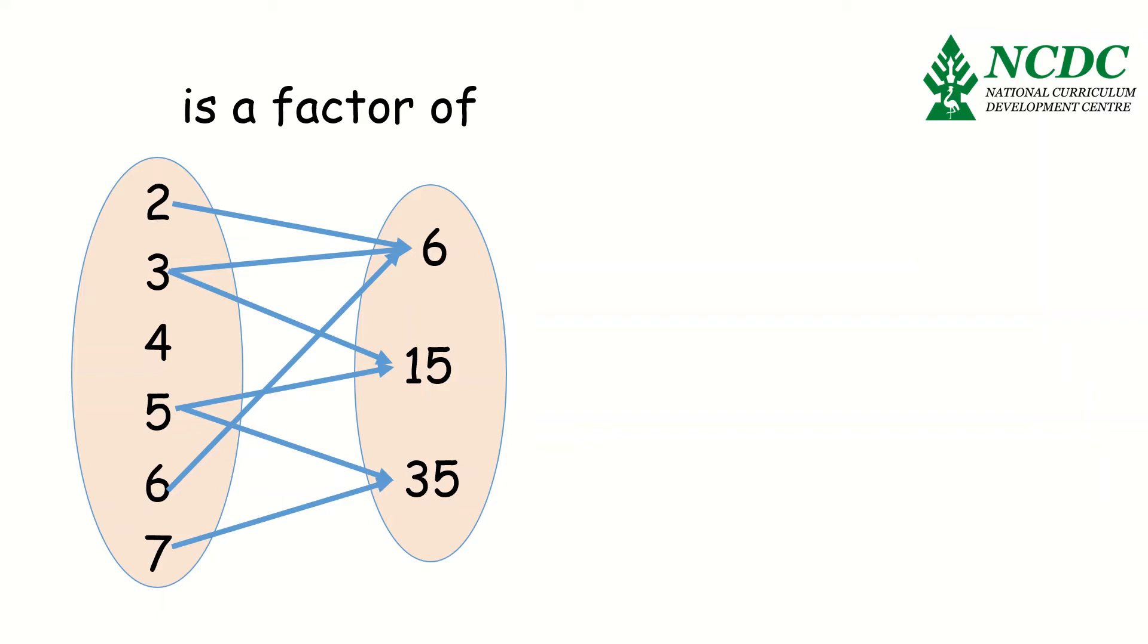And 6 is a factor of 6, because 6 divided by 6 gives us 1. Therefore, 6 is a factor of 6. And this information is perfectly represented in an arrow diagram.